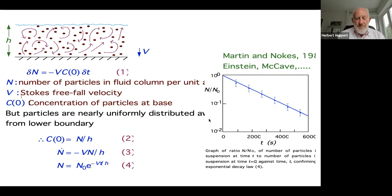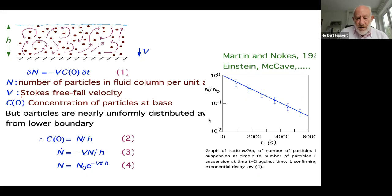This was put forward actually by Einstein initially, and then looked at a little bit by McCabe, but the really proper work was done by Martin and Noakes. They set up a fairly large turbulent flow with particles in it, took photographs, and then counted the particles — one, two, three, four, five, six. Of Martin and Noakes, one was the PhD supervisor and one was the PhD student, so guess who counted the particles? And you see on the graph there was a very good representation.